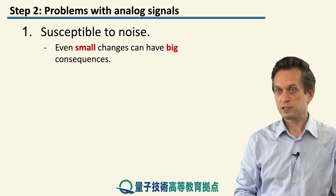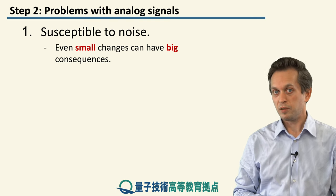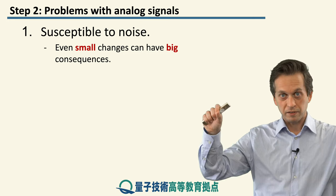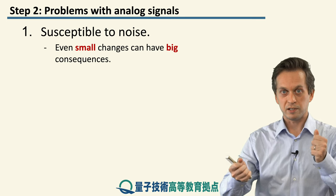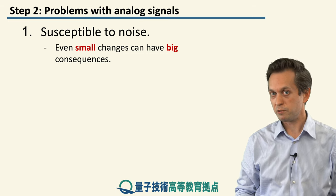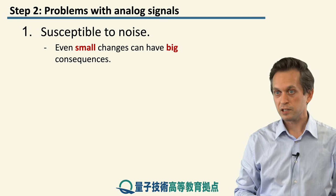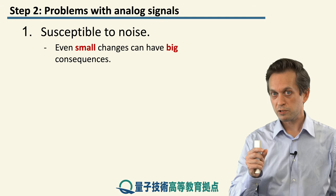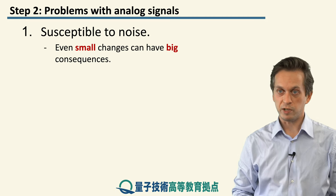But the problem with this type of transmission is that it's very susceptible to noise. Some of you may have heard that AM radios and old TV broadcasts required antennas that you always had to fiddle around to find the best possible reception. And even then the signal quality was nothing like what we are used to today, particularly for TV and image quality. Analog signals are very susceptible to noise because even small changes introduced by noise can have very big differences in the meaning of the message.